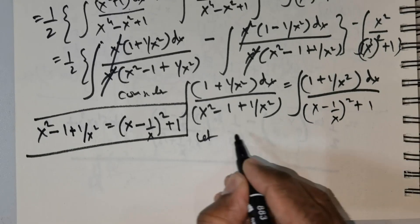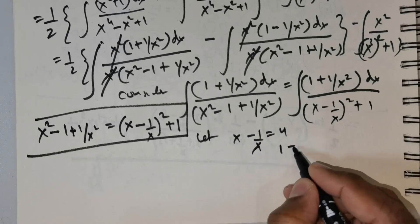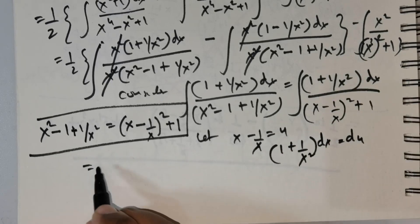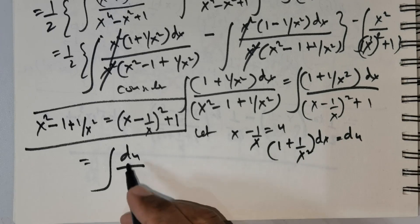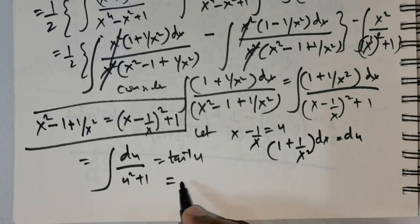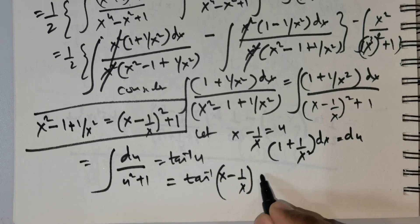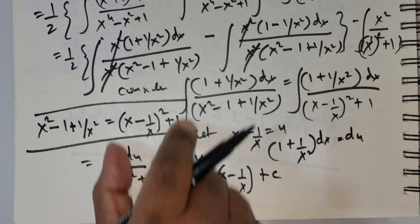Now I make the substitution: let u equal x minus 1 over x. Differentiating gives 1 plus 1 over x squared times dx equals du. Substituting, this becomes du divided by u squared plus 1, which is nothing but arctan of u, which is arctan of x minus 1 over x, plus an arbitrary constant C.